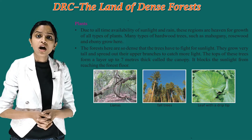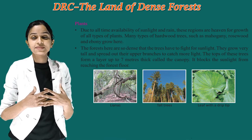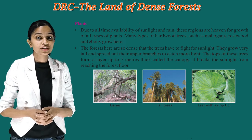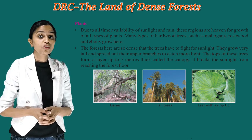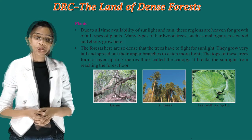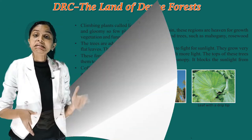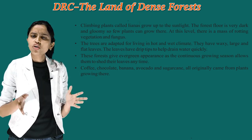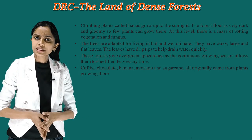The forests here are so dense that the trees have to fight for sunlight. They grow very tall and spread out their upper branches to catch more light. The tops of these trees form a layer up to 7 metres thick called the canopy. It blocks the sunlight from reaching the forest floor. Climbing plants called lianas grow up to the sunlight. The forest floor is very dark and gloomy, so few plants can grow there.